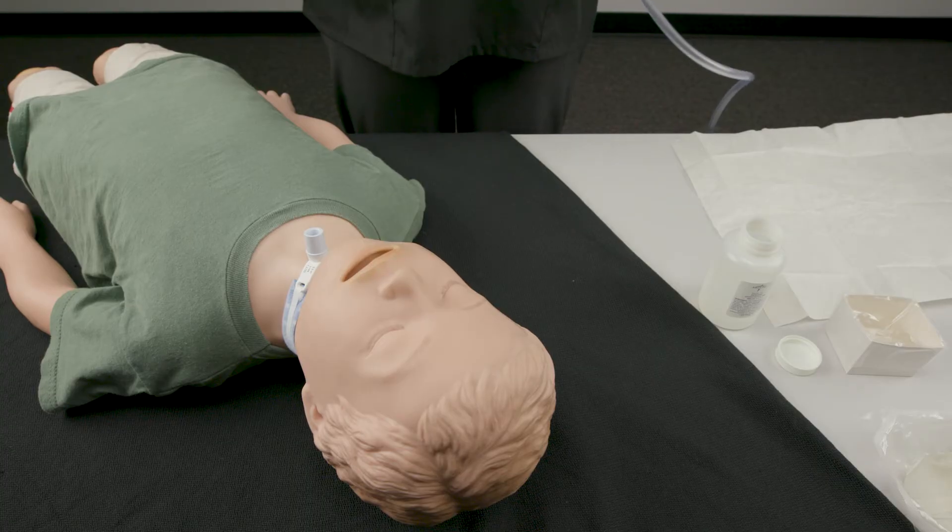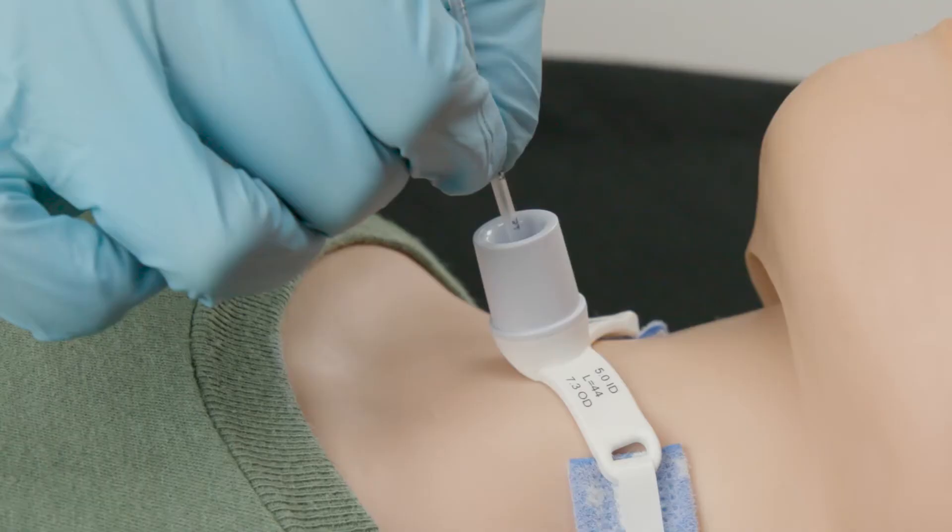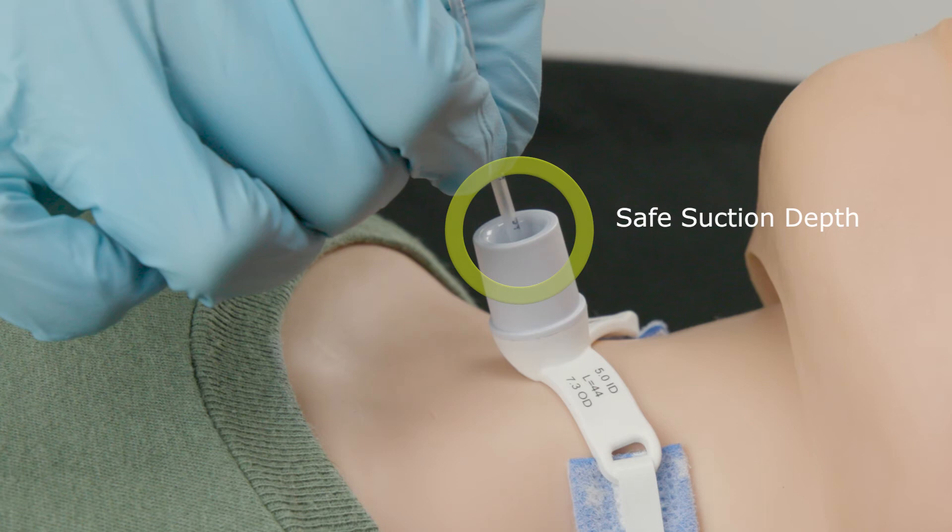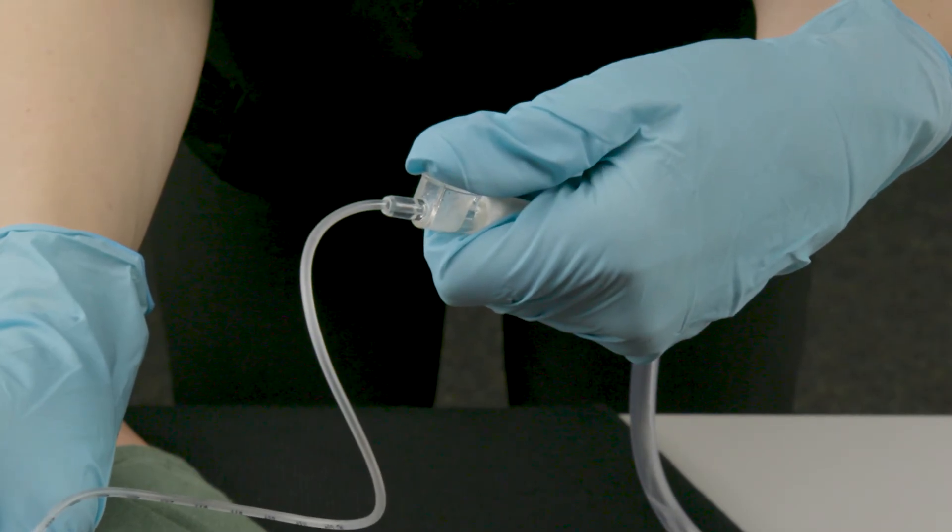Use your dominant hand to insert the tip of the suction catheter into the hub of the trach tube. Continue to advance the catheter to your patient's safe suction depth. Use the thumb of your non-dominant hand to block the thumb port on the suction catheter. This creates suction pressure within the catheter.